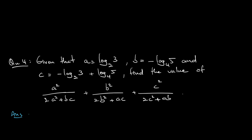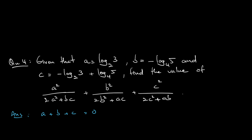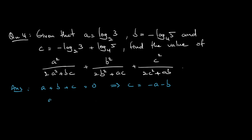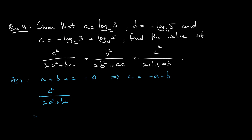Some of you may already notice that A + B + C = 0. Starting from this fact, I try to rewrite each fraction. Since A + B + C = 0, I can write C = −A − B. Substituting into the first fraction gives A²/(2A²+B(−A−B)).